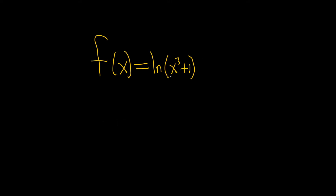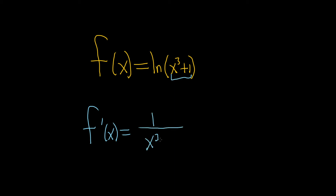So what we'll do is we'll use the chain rule. When we take the derivative, it'll be 1 over all of this stuff — so 1 over x cubed plus 1. That's the derivative of the outside evaluated at the inside, so you just leave the inside piece untouched.